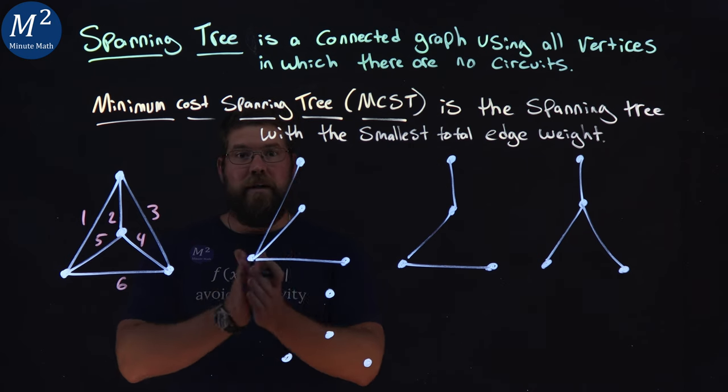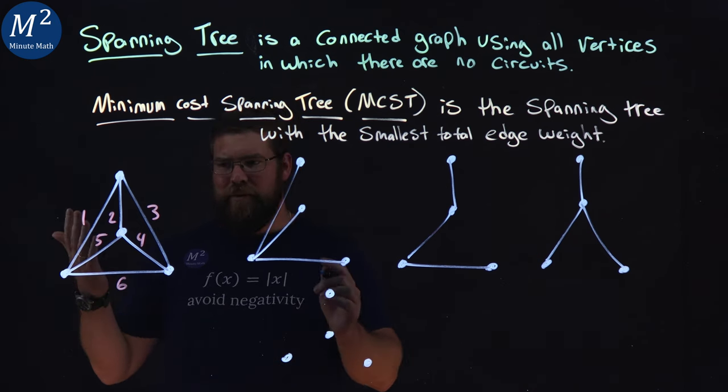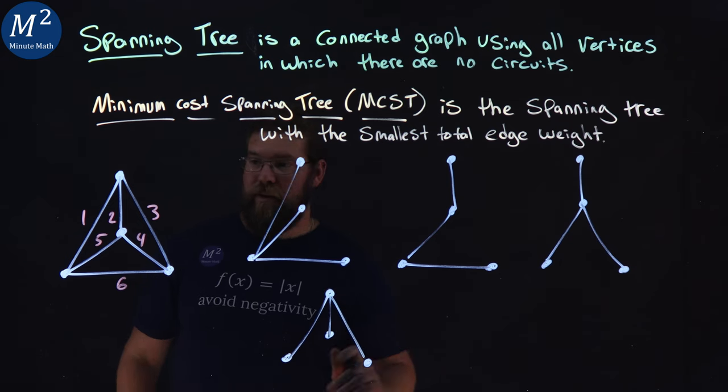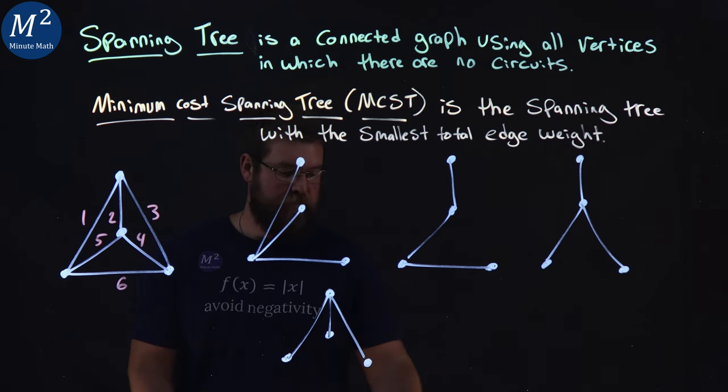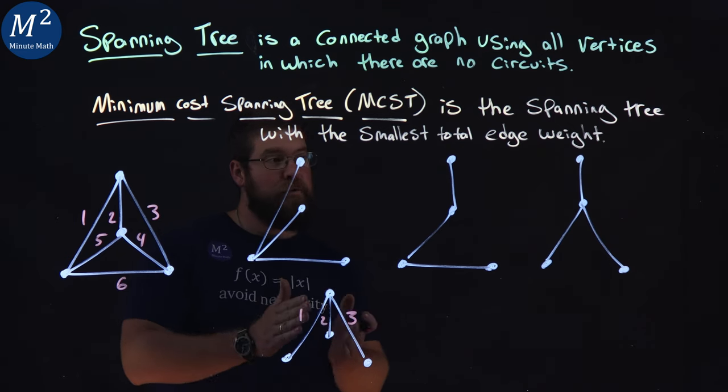And then I want to find the spanning tree that has the lowest edges. I'm looking at the graph here. I want to get the one, two, and threes. So we have the one, two, three. That's going to be the lowest here. One, two, and three.